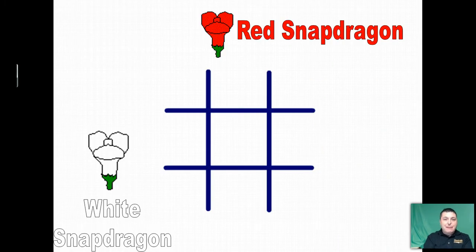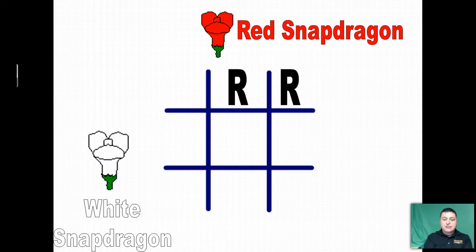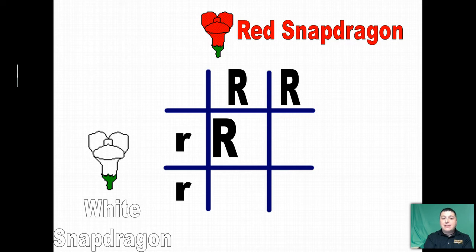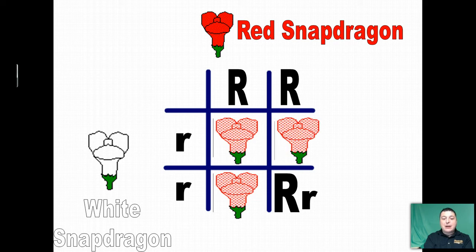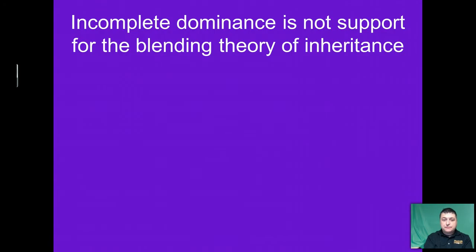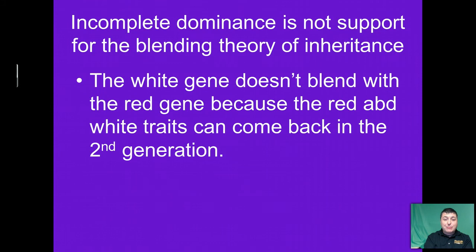Let's explain how blending is not happening here using a Punnett square and a flower called a snapdragon. Red snapdragons are pure bred for the red trait — they're homozygous. White snapdragons are also pure bred; they're homozygous recessive for that trait. When red snapdragons are bred with white snapdragons, all of the offspring are going to be heterozygous. But because of incomplete dominance, they all appear pink. Incomplete dominance does not support blending theory because the white allele does not blend with the red one — the red and white traits can come back in the second generation.